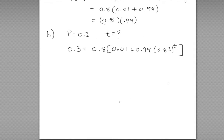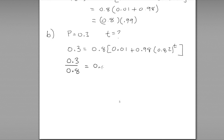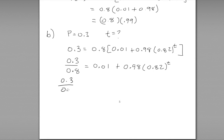Since t is in an exponent, we can't use simple algebra — we'll need logarithms to get t out of the exponent. First, we divide both sides by 0.8, giving 0.3 divided by 0.8 equals 0.01 plus 0.98 times 0.82 to the power of t. Then we move 0.01 to the left-hand side: 0.3 divided by 0.8 minus 0.01 equals 0.98 times 0.82 to the power of t.